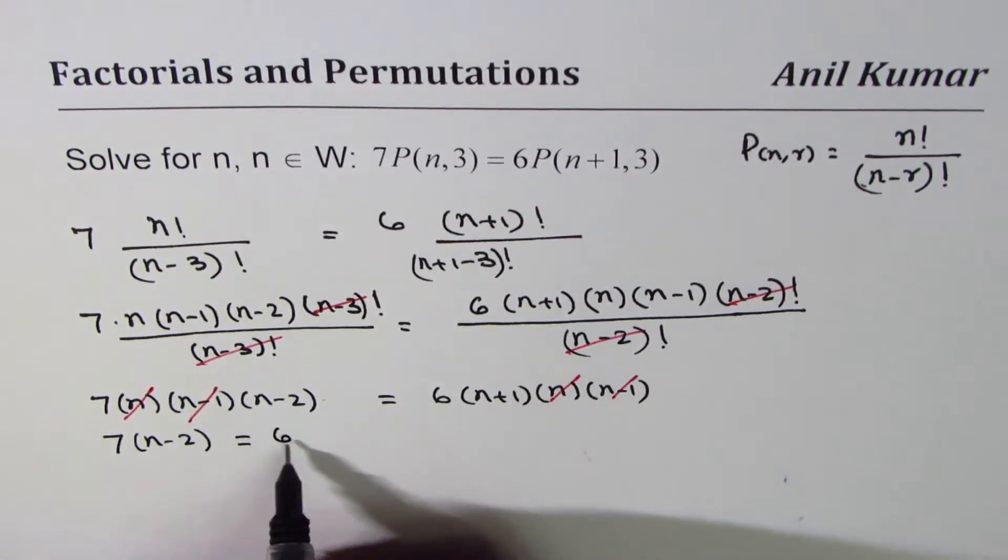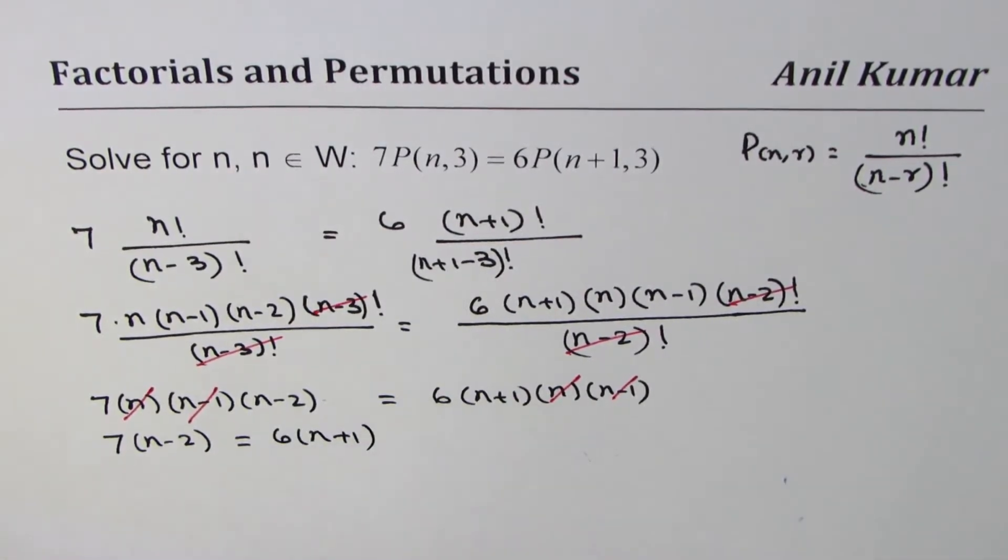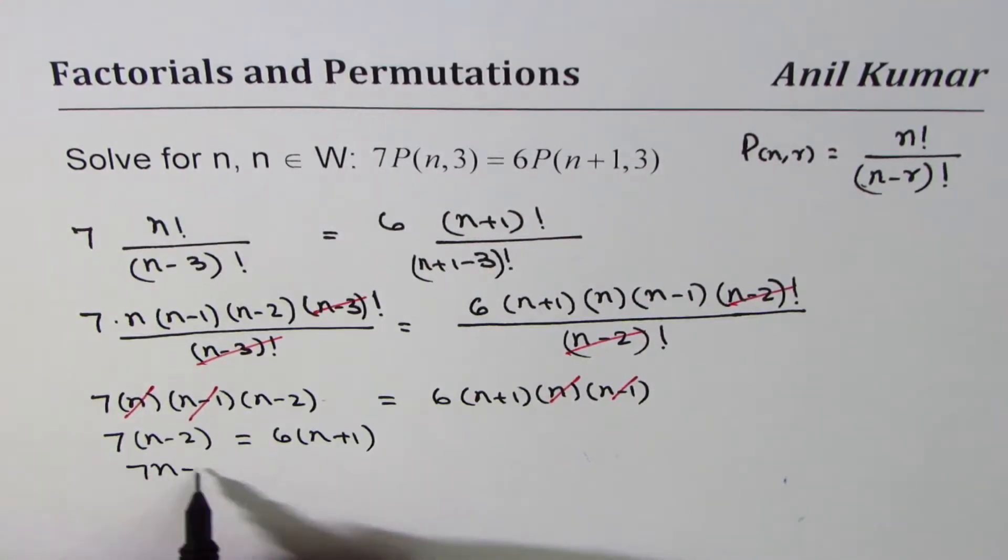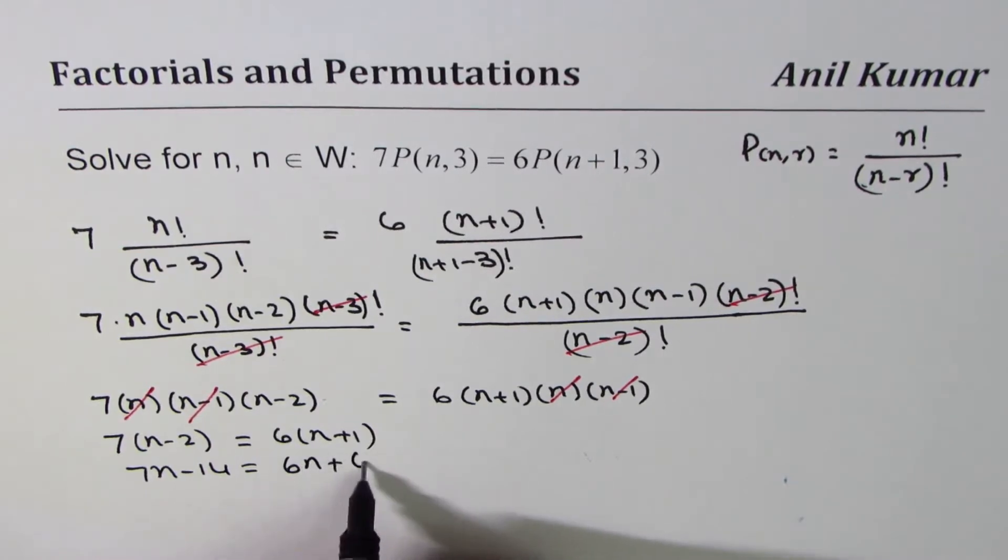Which expands to 7n minus 14 equals 6n plus 6.